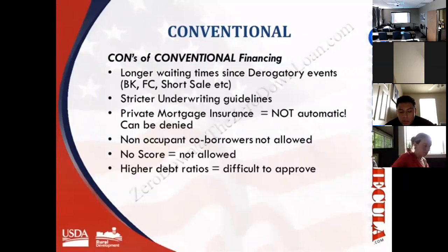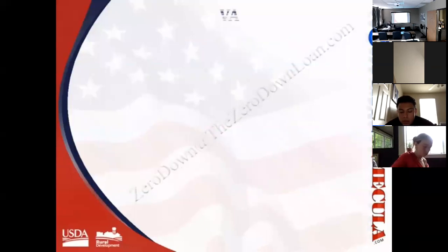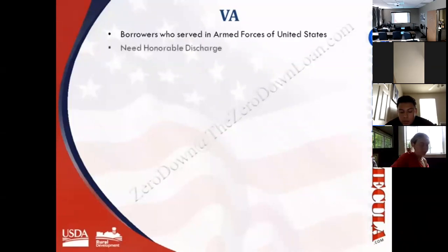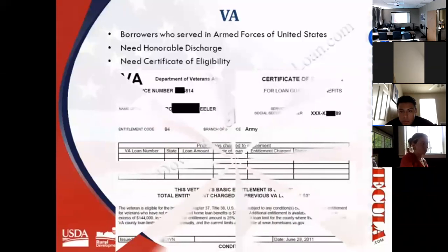Until the loan-to-value drops to 80%, the seller can only contribute three percent of the purchase price towards closing costs. VA loans are for those who have served or are presently serving in the U.S. armed forces. If discharged, the discharge must be other than dishonorable as shown on the DD-214 separation papers. The VA gives the lender a guarantee of up to 25% of the loan amount, so if the homeowner forecloses and the property sells at 75% of value, the lender still recovers the remaining 25% from the VA.